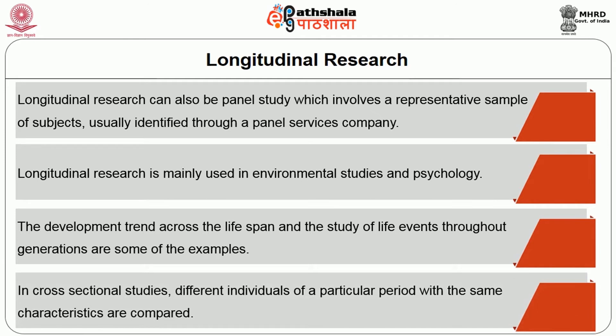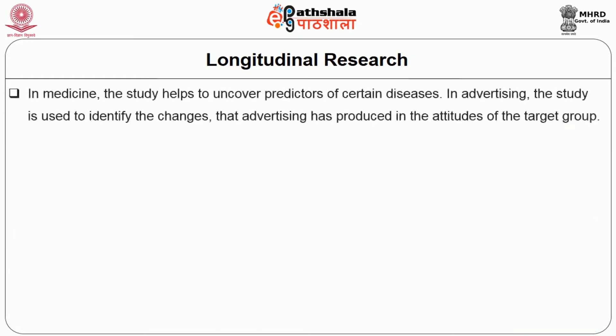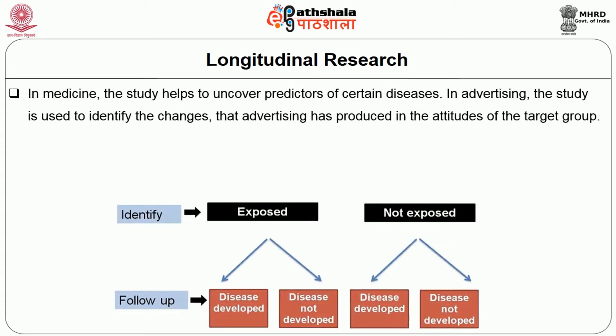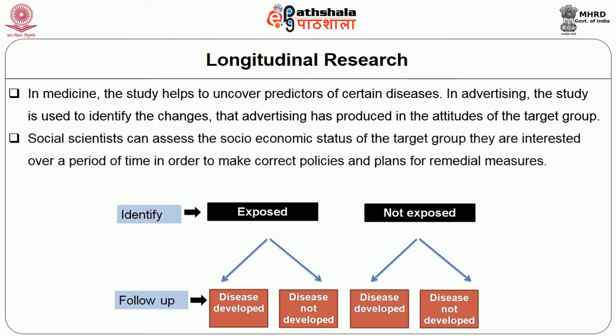In cross-sectional studies, different individuals of a particular period with the same characteristics are compared. In medicine, the study helps to uncover predictors of certain diseases. In advertising, the study is used to identify the changes that advertising has produced in the attitudes of the target group. Social scientists can assess the socio-economic status of the target group over a period of time in order to make correct policies and plans for remedial measures.